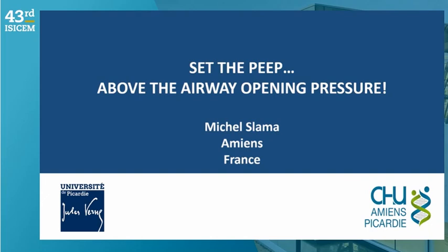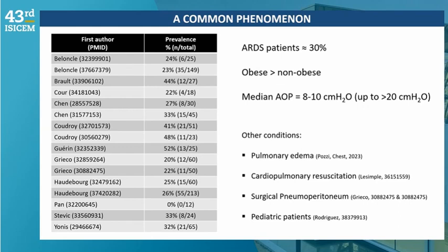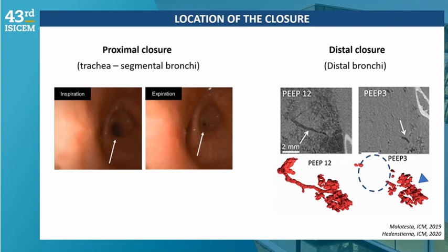That will be hard to follow after Luciano's presentation. I will try to convince you to set the PEEP at least above the airway opening pressure. The closure of small airways involving the whole lung during deflation induces no communication between airways and alveoli. The threshold for reopening the collapsed airway is what we call airway opening pressure (AOP). In patients with ARDS, the prevalence of AOP or airway closure is from 20 up to 44%, demonstrated by Clément Brault in our unit. The median AOP is between 8 and 10. Airway closure can be found not only in ARDS but in other clinical situations. Prevalence is higher in obese patients.